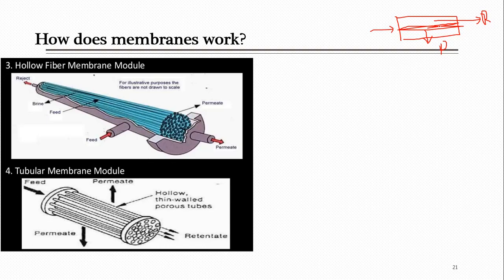Now we have to look at how membranes make separation in practice. Consider a hollow fiber membrane — there are fibers of small diameter that are hollow from inside, somewhat like tubes. There are also tubular modules and hollow fiber modules. To understand this system, consider it similar to a shell and tube heat exchanger: there is some shell outside, and inside there are tubes.